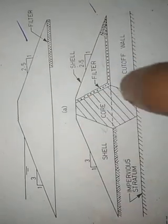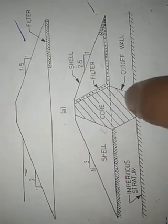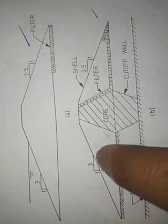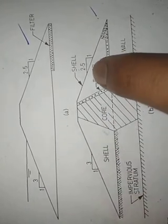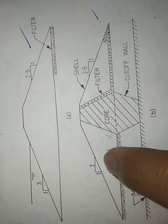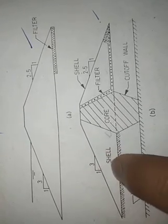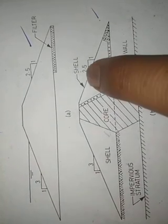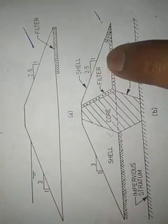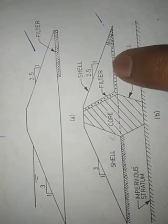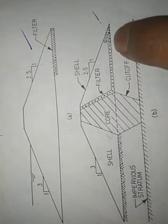And there are two types of slopes provided: in upstream, slope provided is 3:1 and in downstream 2.5:1.